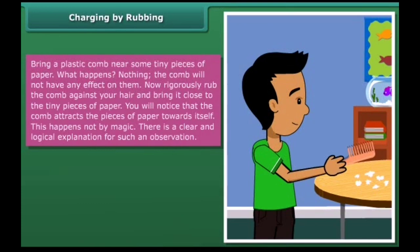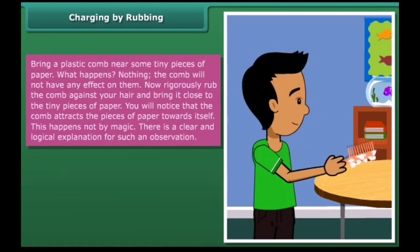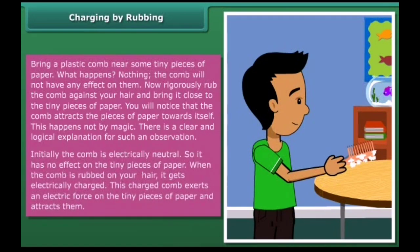Charging by rubbing. Bring a plastic comb near some tiny pieces of paper. What happens? Nothing. The comb will not have any effect on them. Now vigorously rub the comb against your hair and bring it close to the tiny pieces of paper. You will notice that the comb attracts the pieces of paper towards itself. There is a clear and logical explanation for such an observation. Initially, the comb is electrically neutral, so it has no effect on the tiny pieces of paper.